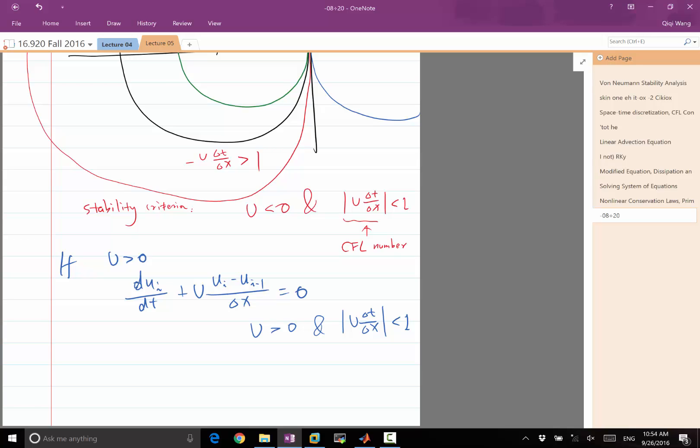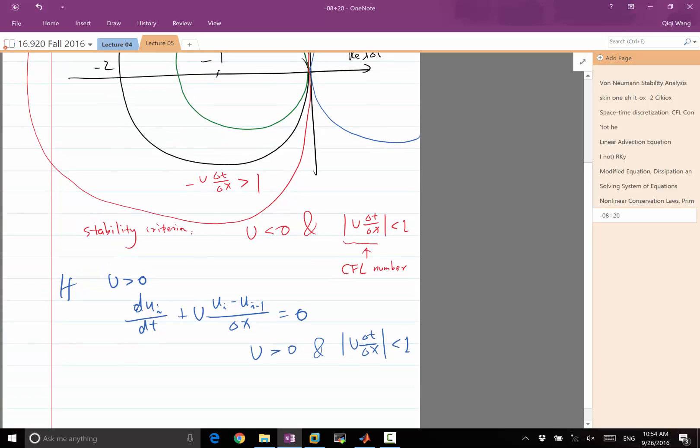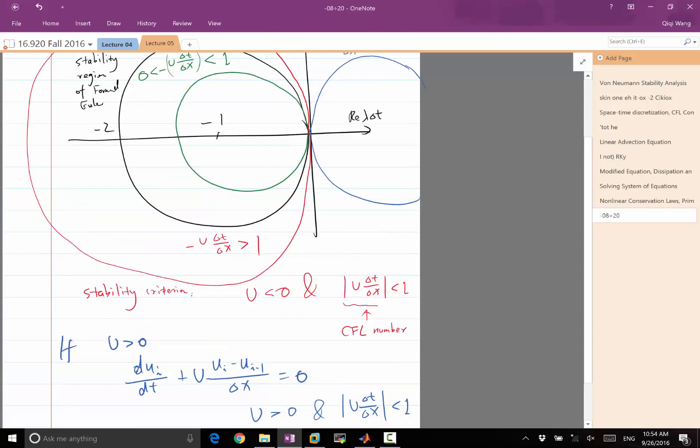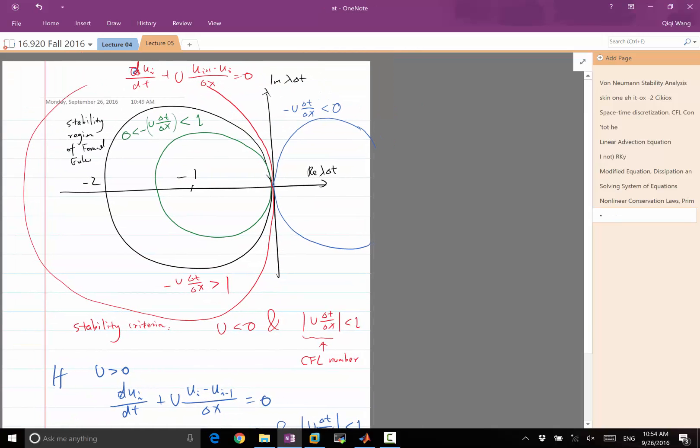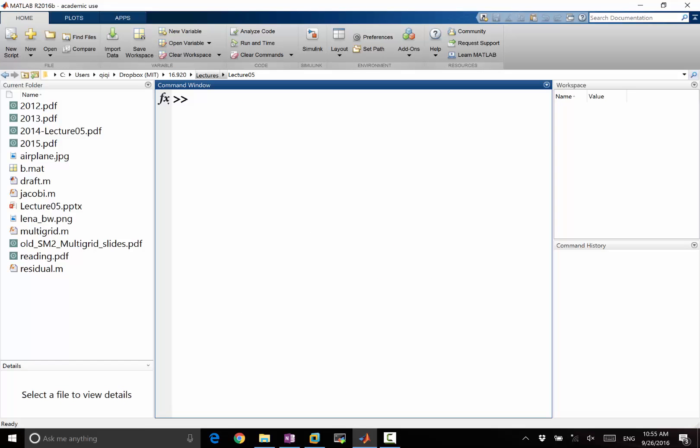Okay. So in both cases, when we look at the discretized operator, dui dt plus u ui plus 1 minus ui over delta x equal to 0. So in both cases, we are biasing the spatial points we are using towards which side. When u is less than 0, we are biasing towards the right side. When u is greater than 0, we are biasing towards the left side. And do you remember how the differential equation behaves for positive or negative u?